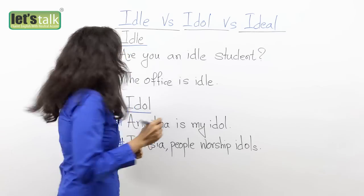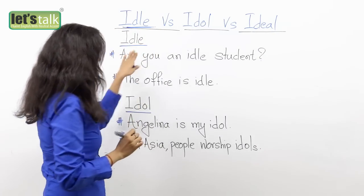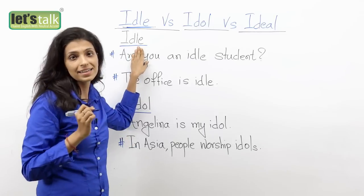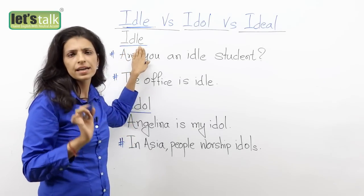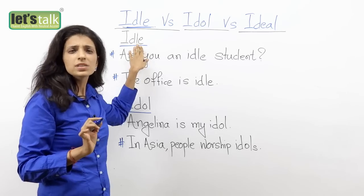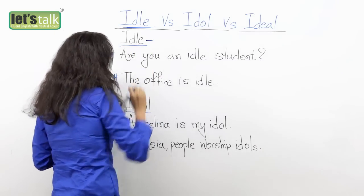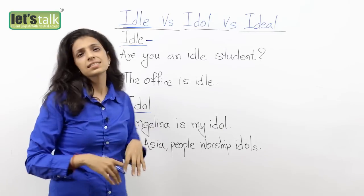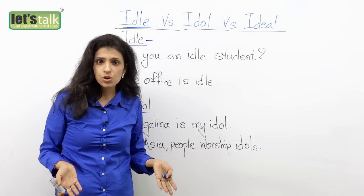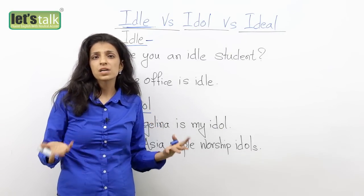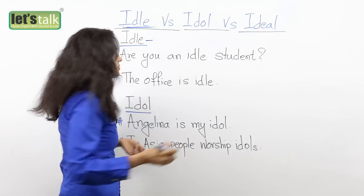So let's take the first one: idle. Now we say this as 'idle' — though the 'e' comes at the end of the word, you say 'idle.' Now what does this mean? Idle means something that is not in use, or someone who's doing nothing — you're just doing nothing, so you're idle.